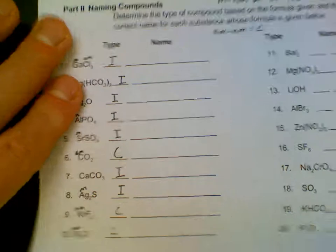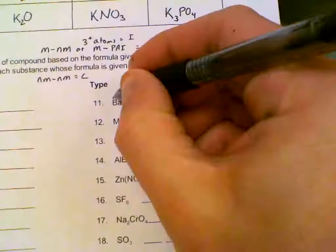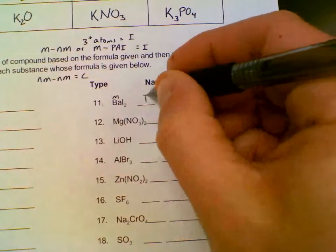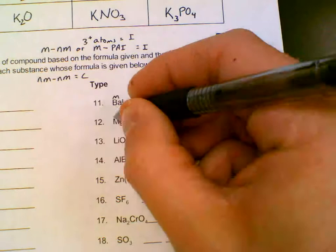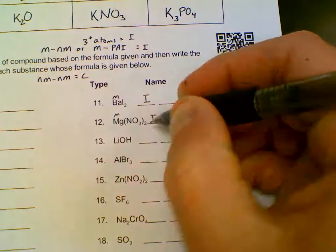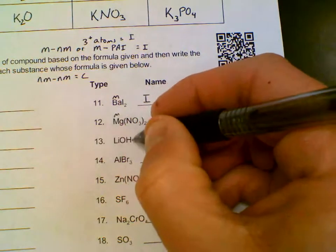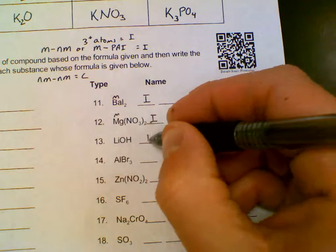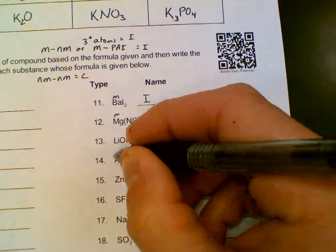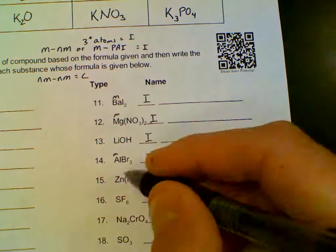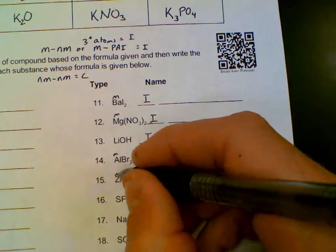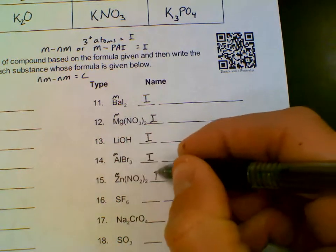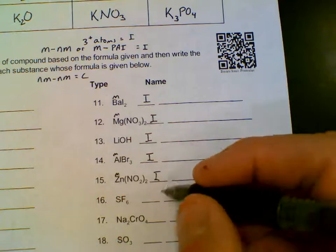The next column. Barium is a metal, ionic. Magnesium is a metal, ionic. Lithium, oxygen, hydrogen, three atoms, ionic. Aluminum is a metal, ionic. Zinc is a metal, three or more atoms, ionic. Sulfur is a nonmetal, it makes this covalent.